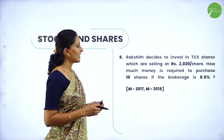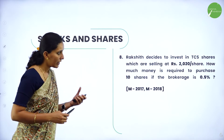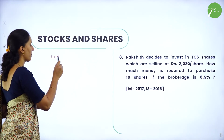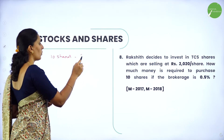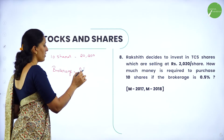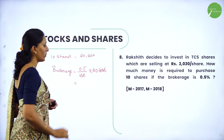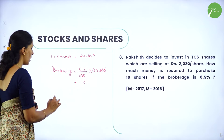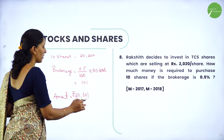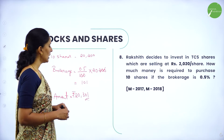Next question: Rakshit decides to invest in TCS shares selling at Rs.2020 per share. How much money is required to purchase 10 shares if brokerage is 0.5%? For 10 shares, amount = Rs.20,200. Brokerage = 0.5/100 × 20,200 = Rs.101. Therefore total amount required = Rs.20,301.